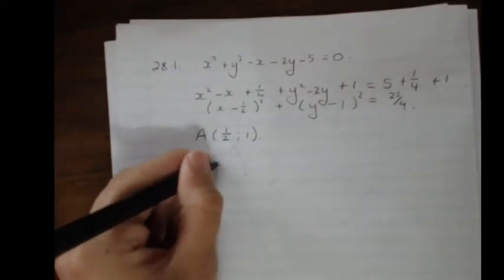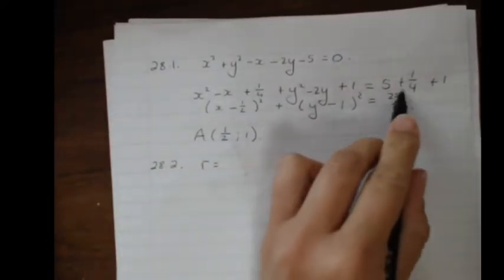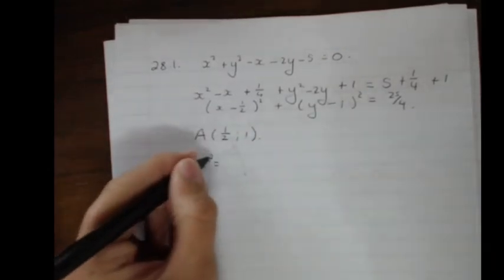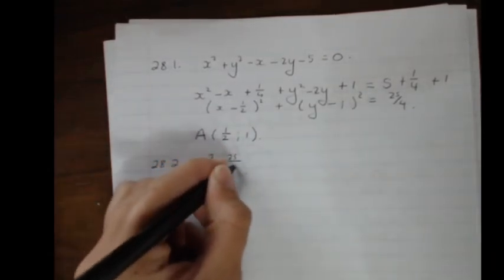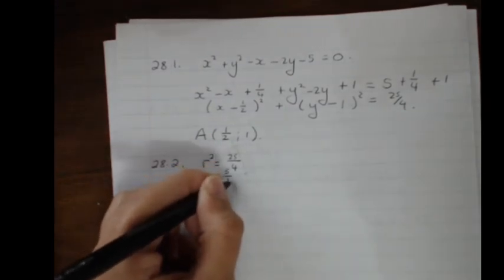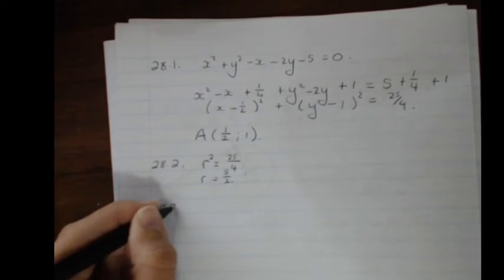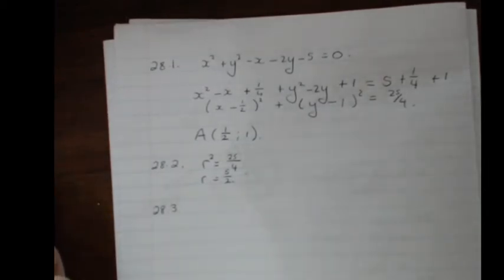Question 28.2 asks for the radius. Since radius squared equals 25 over 4, the radius is 5 over 2. Question 28.3 says: if chord PQ is perpendicular to AM, determine the equation of chord PQ. I'll draw a quick sketch to visualize what's happening — there's a chord PQ on the circle with midpoint M at (2, 1), and A is the center at (1/2, 1).